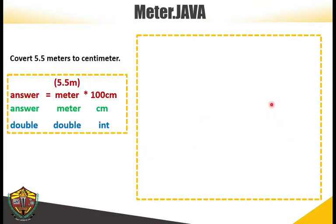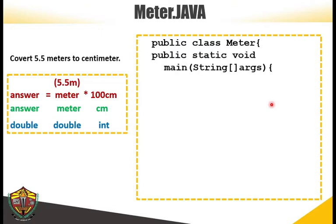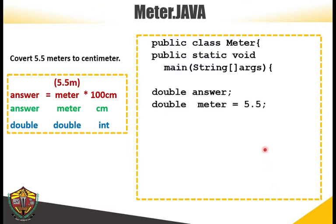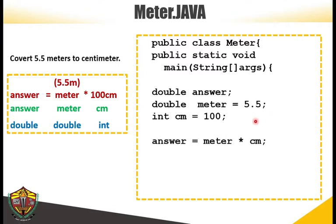Writing the whole code. Public class meter. Public static void main string parts. Double answer. Double meter is equal to 5.5. Int CM is equal to 100. Answer is equal to meter times CM. System.out.println.